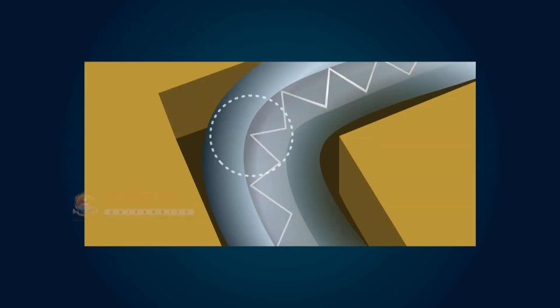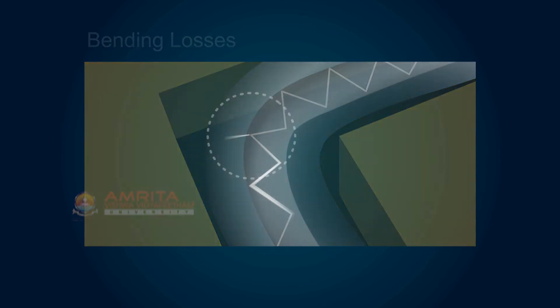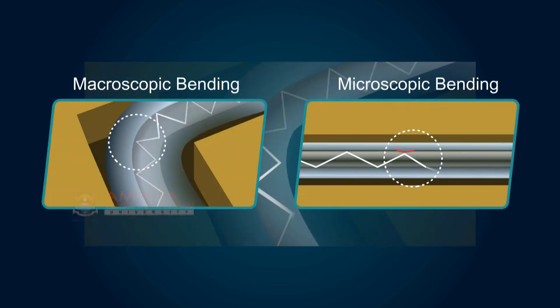The loss which exists when an optical fiber undergoes bending is called bending losses. There are two types of bending: macroscopic bending and microscopic bending.